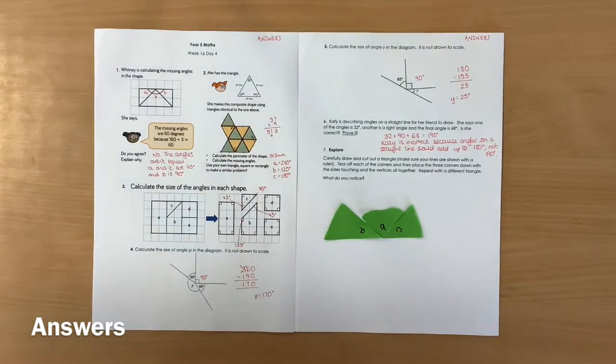Now just like anything with maths, doing it once isn't enough to prove it, so I've got another one here. So that's my green triangle.